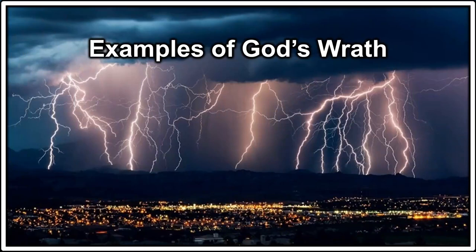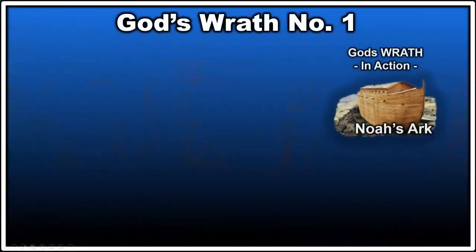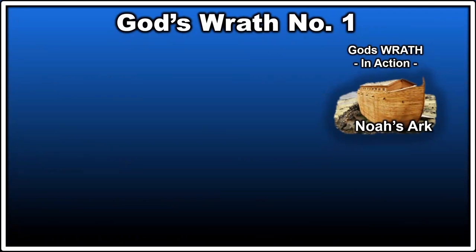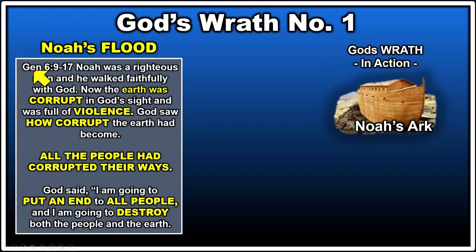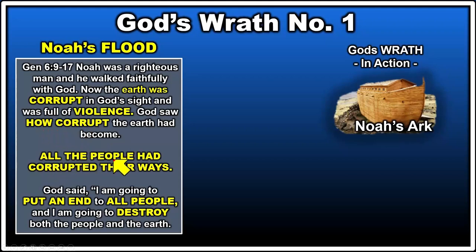This looks pretty gruesome — it looks like God is a God of wrath. Let's look at what God has done in the past. Example one: Noah's ark. In Genesis 6 we read: 'Noah was a righteous man and he walked faithfully with God. Now the earth was corrupt in God's sight and full of violence. God saw how corrupt the earth had become — all people had corrupted their ways — and God said, I am going to put an end to all the people and destroy both the people and the earth.'